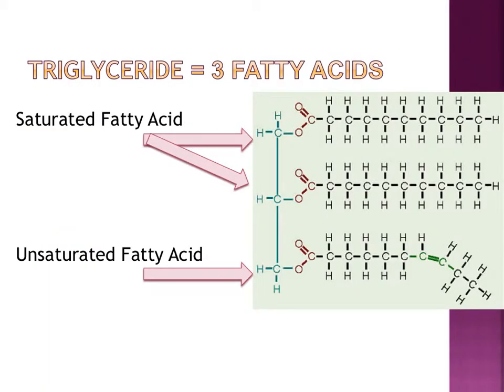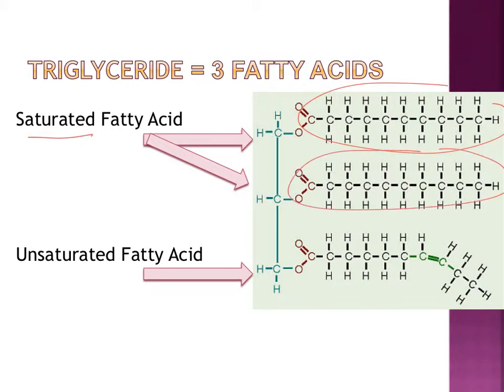This is the second picture that you will want to include in your notes — the triglyceride. Each fat will need three fatty acids attached to be a complete fat. As you can see here, there are two saturated fatty acids — these are full of hydrogens — and the last one is unsaturated. You can see it has one double bond. Please be sure to circle that double bond.